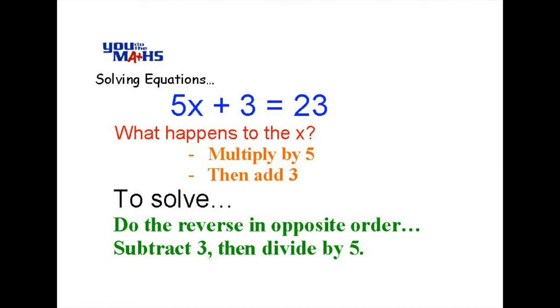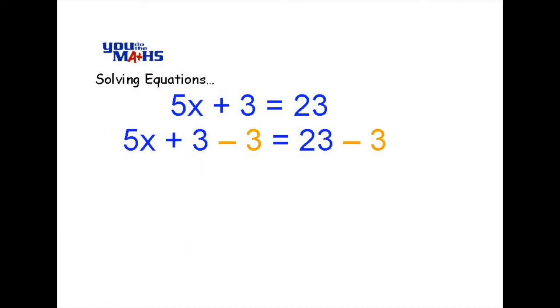In the first case, we subtract 3 from both sides of the equation, and what that does is removes the plus 3 that's in the first line. If you take away 3 from both sides, the 3 disappears on the left, and 23 minus 3 is equal to 20. So we're left with 5 multiplied by x equals 20.